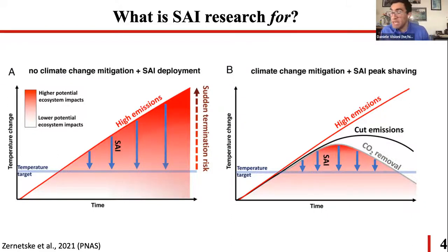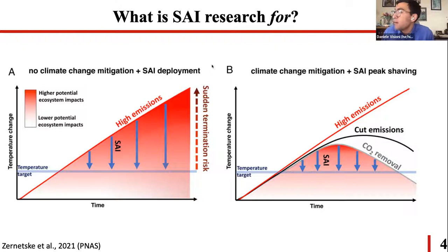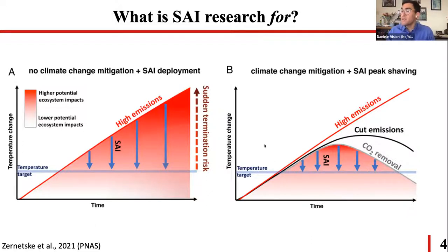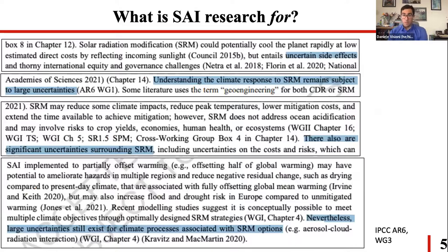The main idea is that SAI should be considered as a temporary way to bring down temperatures while emissions are cut and some CO2 is also removed, as shown in this figure on the right. SAI is used to keep temperatures at a certain temperature target during that period. In the last IPCC report, Working Group 3, SRM is mentioned in a few places — and the thing that struck me was that the report most focuses on the uncertainties tied to solar radiation modification.